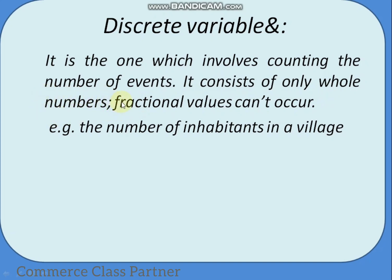For example, the number of inhabitants in a village is a discrete variable. You can have 100 inhabitants — that is a whole number value. A fractional value, such as 100.1 inhabitants, cannot occur.